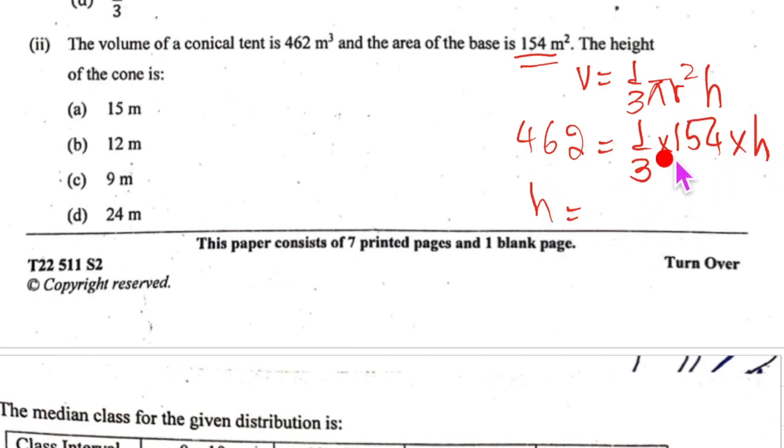Our h will be equal to 462 into 3 upon 154. Now can you see 4, 3 is 12 and 5, 3 is 15 and that carried over 1. So this is going 3 times. So our height is 9. Our answer is C that is 9 meter not centimeter.